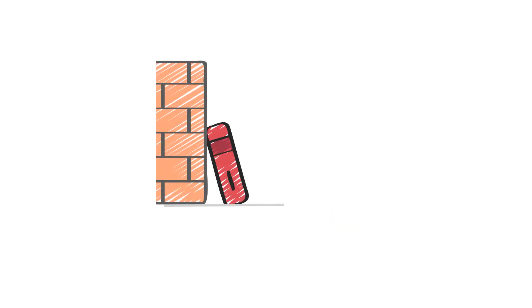Consider a book which is leaning against a wall. What is obvious is that the book is exerting some force on the wall — let's label it as the force of book on the wall. What is not so obvious is that the wall is also putting an equal force on the book, but in the opposite direction. Let's label this force as wall on the book.